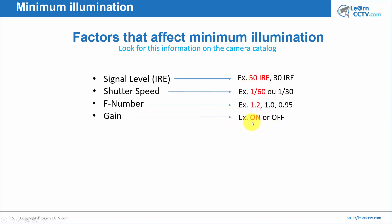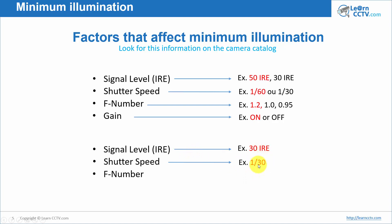All these factors matter when looking at minimum illumination in a catalog. You need to look at 50 IRE, 1/60 shutter speed, F-number 1.2, and gain on when comparing cameras. If another camera is specified with 30 IRE, 1/30 shutter speed, and F-number 1.0, those settings make it easier to show a better-looking minimum illumination number in the catalog — but it's not actually a better camera in real situations. Just better numbers on paper.